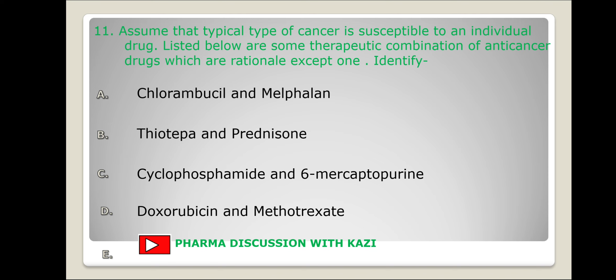To be therapeutically rational, combinations of anti-cancer agents should consist of drugs that are individually effective in the cancer type being treated, belong to different anti-neoplastic classes, or have different mechanisms of action. Each pair given belongs to different classes and has different mechanisms of action, except the combination of chlorambucil and melphalan, as both act as alkylating agents.